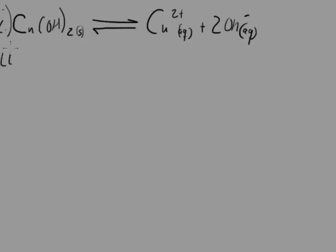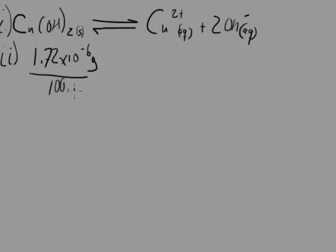Question II asks us to calculate the solubility in moles per liter of copper 2 hydroxide at 25 degrees C. They actually give us the solubility already — it's just not in the units we want. They tell us the solubility is 1.72 times 10 to the negative 6 grams per 100 milliliters of solution. Molarity — molar concentration — is moles per liter, so the first thing we can do is convert grams to moles using molar mass.